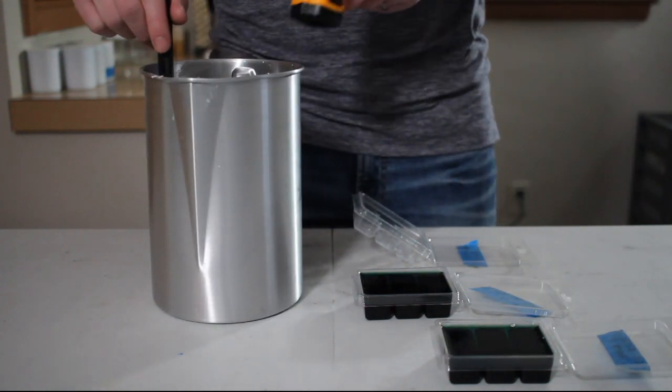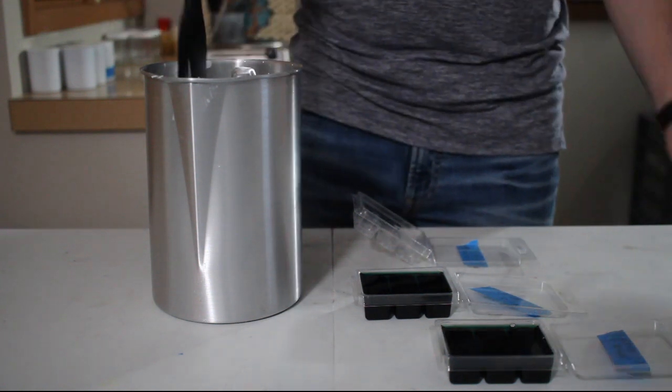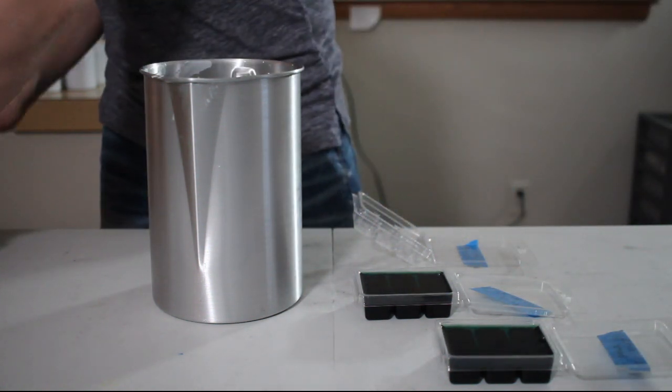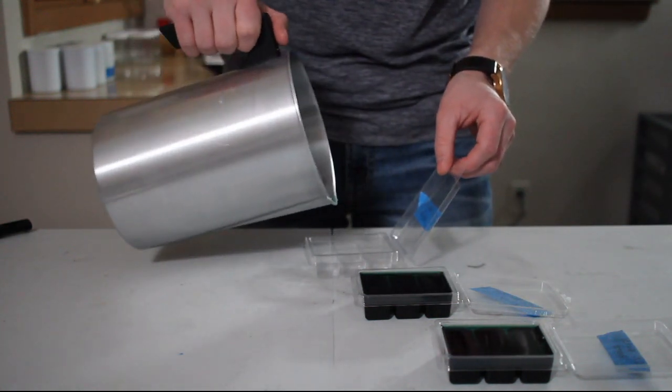Now there's not much wax left in the pour pot so the temperature drops fairly quick but making sure to stir a little bit and watching the temperature super close at 150 degrees Fahrenheit we'll finally pour into the last clamshell melt holder.